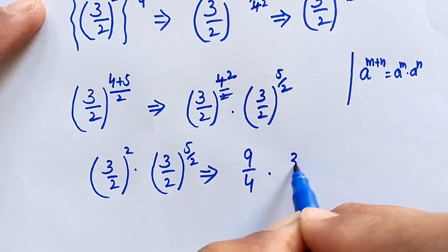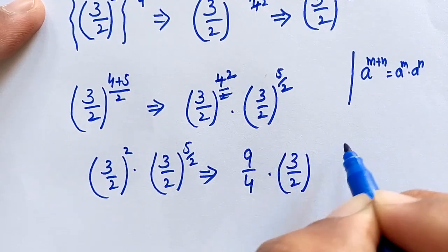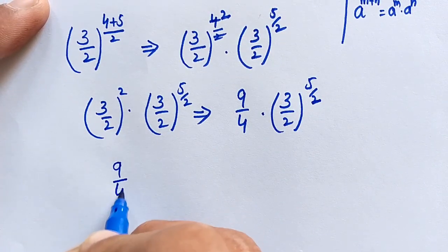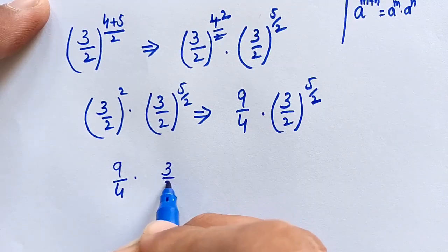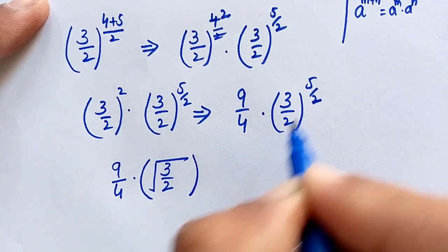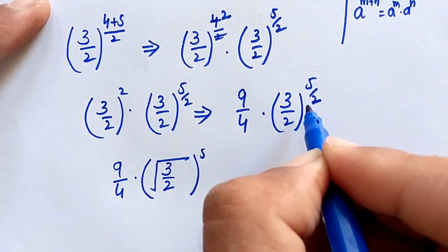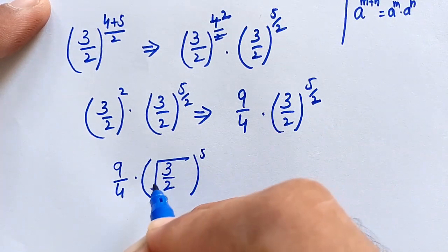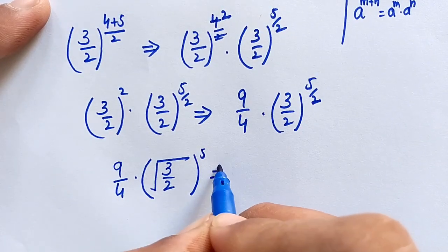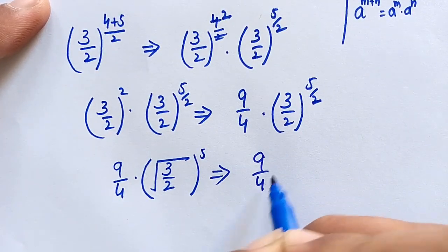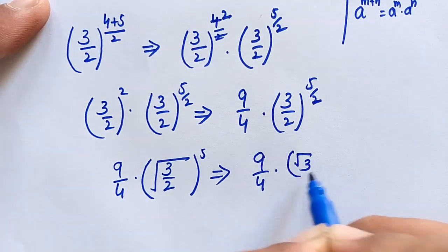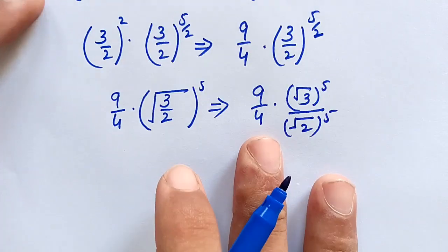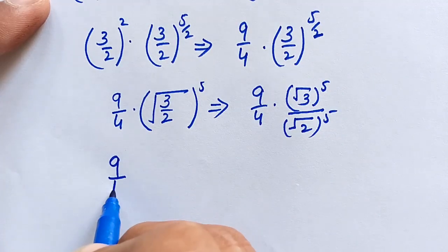Now for (3/2)^(5/2): we replace the 1/2 exponent with square root. So (3/2)^(5/2) = square root of (3/2) to the power of 5, which equals square root of 3 to the power of 5 over square root of 2 to the power of 5.